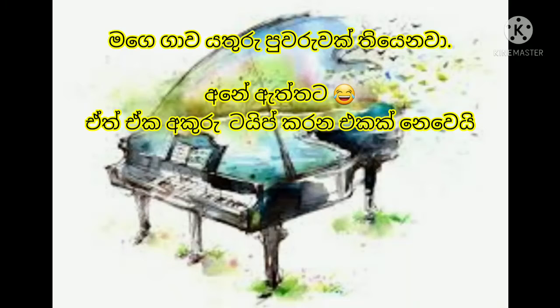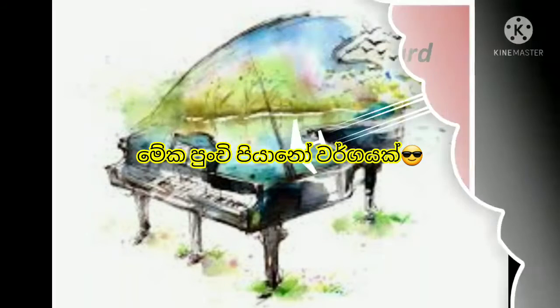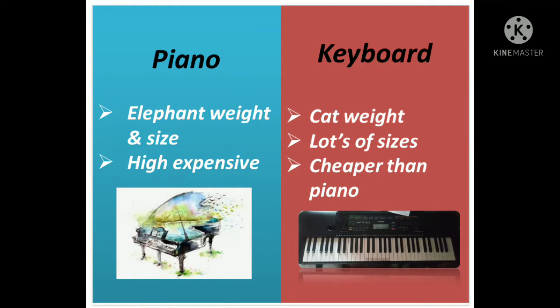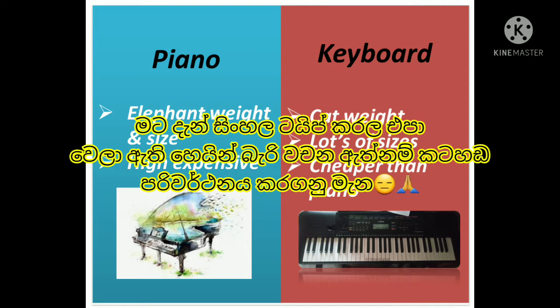I have got a keyboard. Oh really? But this one is not a typing one — it's a kind of a small piano. Piano is elephant weight and high expensive, but the keyboard is cat weight, lots of sizes, and cheaper than piano.